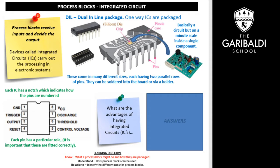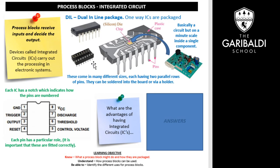Integrated circuits come in many different sizes — I think the smallest is about eight pins, and they go up to multiple pins of varying sizes. This particular one has two parallel rows of pins, as you can see. I also want to point out that little notch — you can also see it in the circuit diagram. That's really important to identify because on the left-hand side of that notch is where the first pin is, and they go anticlockwise. Each pin has a particular role, and it's important that these are fitted in correctly — they are polarity sensitive.